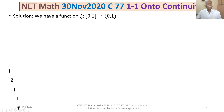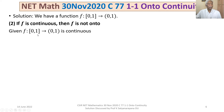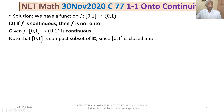We now discuss the solution in detail. Let us take the statement given in option 2: if f is continuous, then f is not onto. We are given f: [0,1] → (0,1) is continuous. Note that [0,1] is a compact subset of ℝ because it is a closed and bounded subset of ℝ, and the compact subsets of ℝ are exactly the closed and bounded subsets.